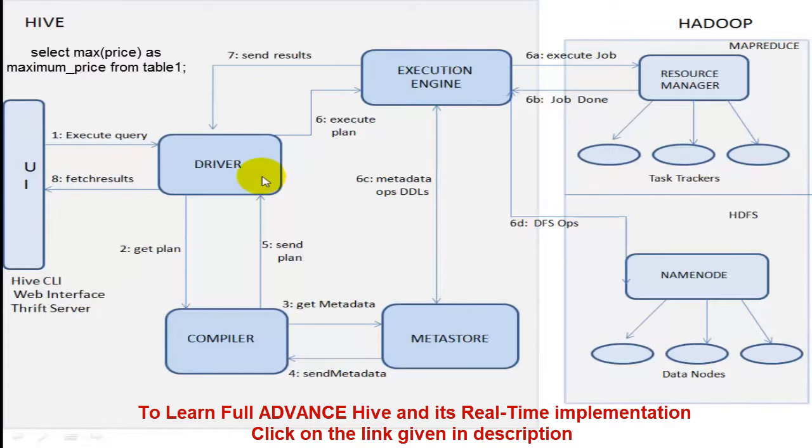Then the compiler component comes. It will do semantic analysis of the program and finally creates an execution plan for the program. While creating the execution plan, it has to get help of Metastore because Metastore is the component which contains the structural information of table 1. Metastore will tell compiler that table 1 contains these many columns and also that column price has which data type. These all information will be used by compiler to create the execution plan.